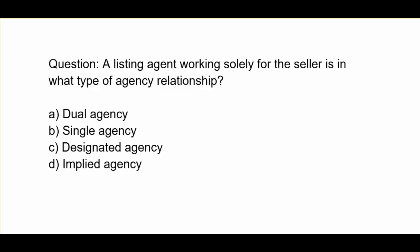A listing agent working solely for the seller is in what type of agency relationship? A. Dual agency. B. Single agency. C. Designated agency. D. Implied agency.